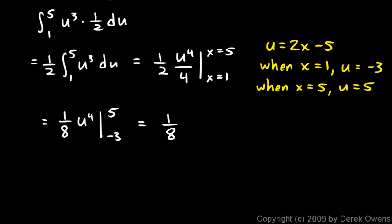1 eighth and then I have 5 to the 4th minus negative 3 to the 4th. And that's 1 eighth of 5 to the 4th, which is 625 minus 3 to the 4th, which is 81. And 625 minus 81 is 544. And 1 eighth of that is 68.